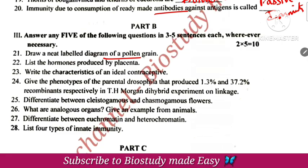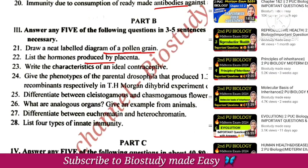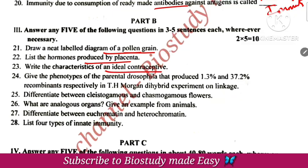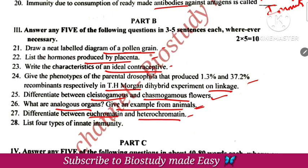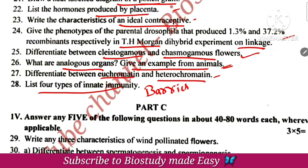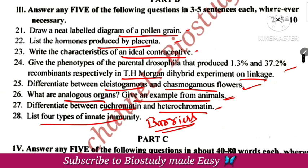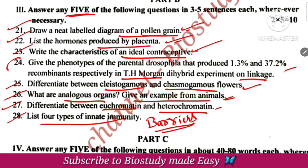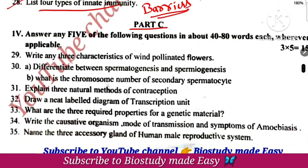Those were all one-mark questions. Next, two-mark questions: pollen grain diagrams, hormones secreted by placenta, ideal contraceptive characters. The linkage experiment by T.H. Morgan. Differentiate between cleistogamous and chasmogamous flowers — again very important. Analogous organs with examples from animals.